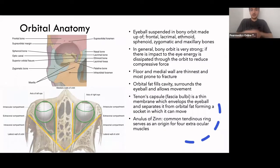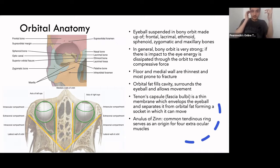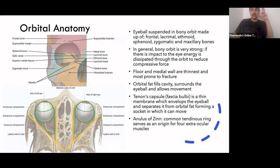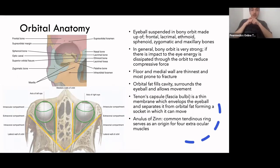Starting with orbital anatomy: your eye is suspended within a bony orbit made up of different bones in your skull — about six different bones. The frontal bone makes up the majority of the roof of the orbit. The zygomatic bone makes up the lateral walls. The maxilla and lacrimal bones make up the medial wall as well as the inferior floor. The ethmoid bone also makes up part of the medial wall. The sphenoid at the back has openings including the superior orbital fissure, inferior orbital fissure, and optic canal, which allow nerves and blood vessels to supply the eye. The bony orbit is quite strong, allowing any impact to be dissipated.